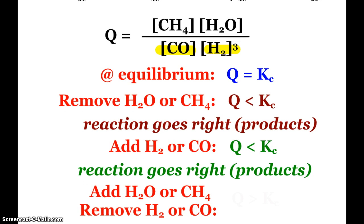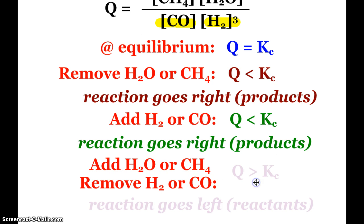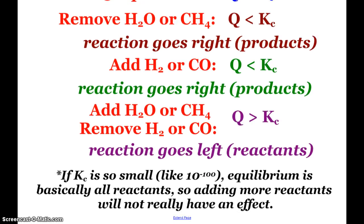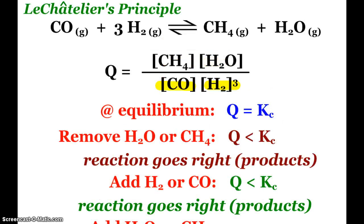Now, for some reason, if I would add water or add methane, if I would add products to my reaction, or if I would remove my reactants, that's when mathematically we would see that Q is getting bigger than the equilibrium constant. And the reaction would go the other way to the left to form more reactants. So typically, not something we choose to do. The only small side note here is that if our equilibrium constant is so small, like 10 to the negative 100, then the equilibrium is basically all reactants. So adding more reactants to the pot will really not have an effect.